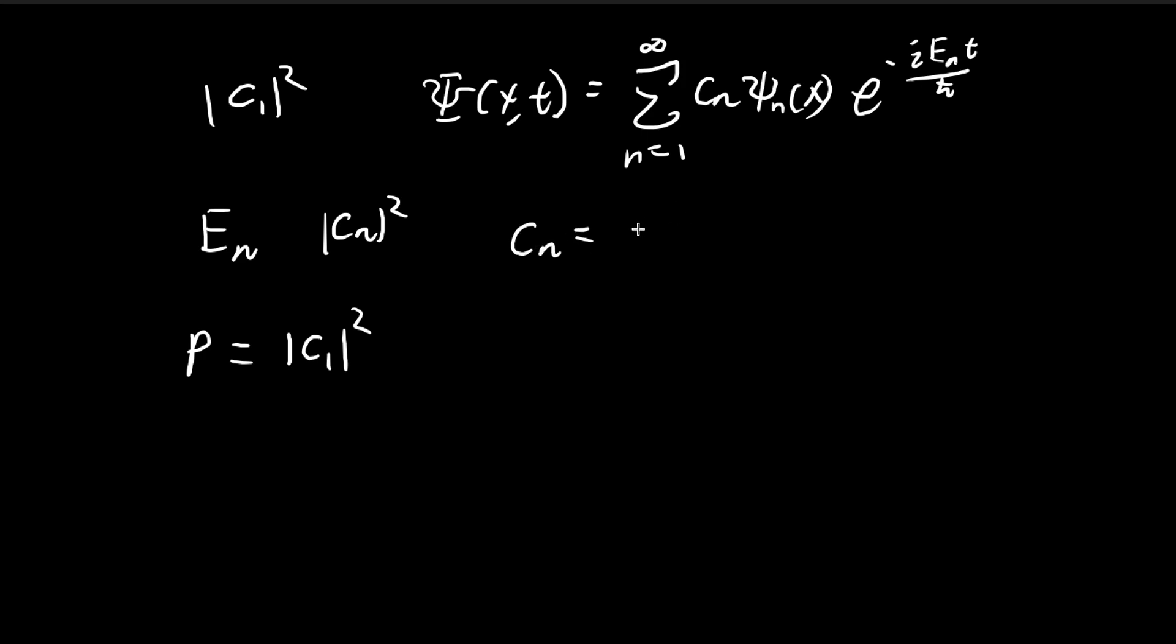Recall that in the previous section, we already found that our cn is given by this expression for n equals to odd numbers. So as you can see, c1 is just equal to 4 times the square root of 6 divided by pi squared. And then we square this. And if you plug this into your calculator, this will be 0.9855. So this is the answer to part c.